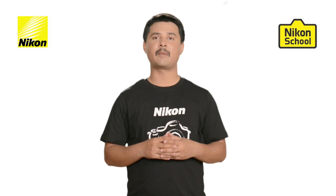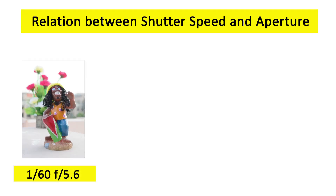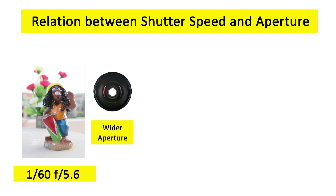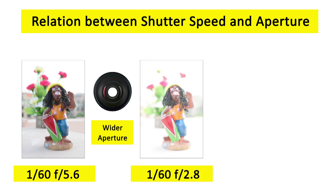Now let us take the same image again. Here you can see an image wherein the background is slightly defocused. If you want to defocus the background further or want a very shallow depth of field, you need a wider aperture — a smaller f-number. An f-number of f/2.8 is good enough to give a very shallow depth of field. However, at 1/60th of a second and f/2.8, you will see the exposure is overexposed.